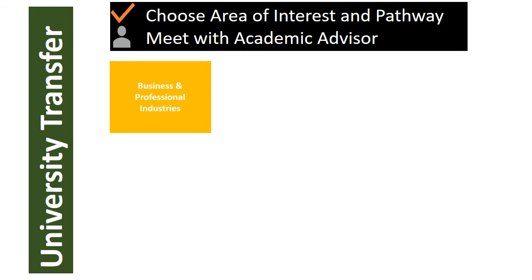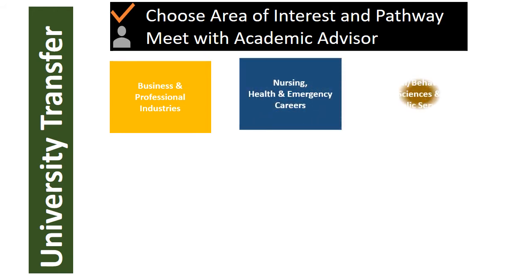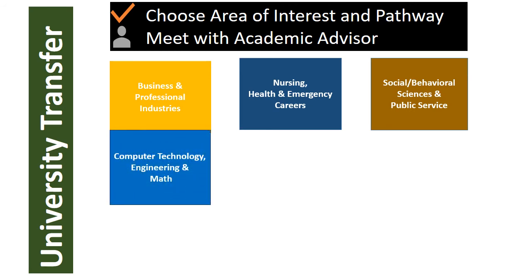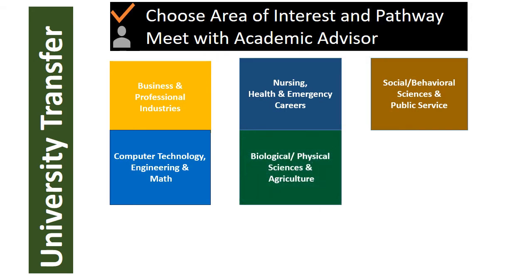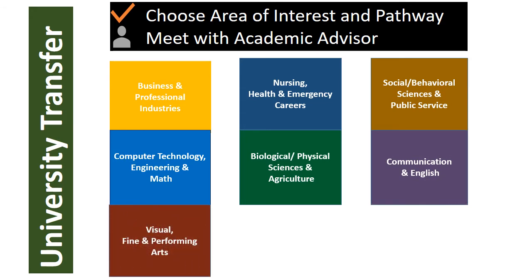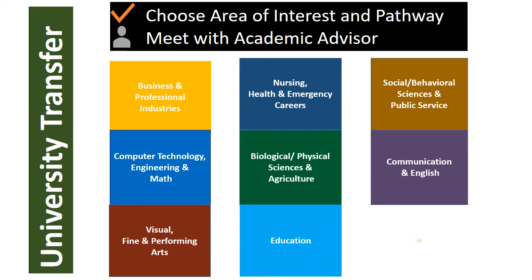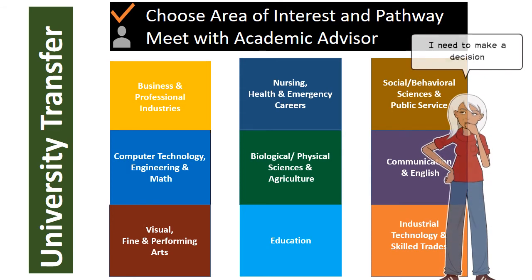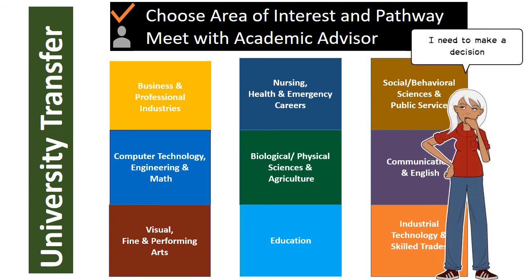It is important to identify and follow a CAC transfer pathway no later than your second semester at CAC. By doing this, you will be able to identify the correct courses you need to transfer into a university degree with minimal or no loss of credit. Listed on the screen are CAC's areas of interest, with specific degree pathways included in each. Schedule a meeting with your CAC academic advisor to assist you in choosing and following a transfer pathway. Do not put this off — it is a very important piece to ensure a successful transfer.